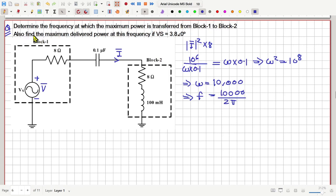Now, also, we have to find the maximum delivered power at this frequency if the source voltage is 3.8 volt. This is the RMS value, 3.8 volt.